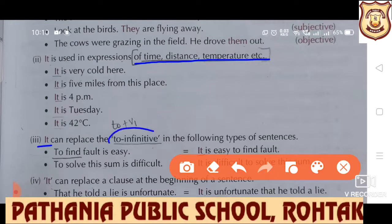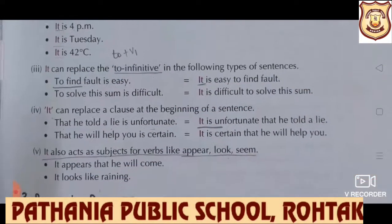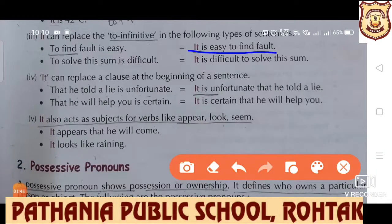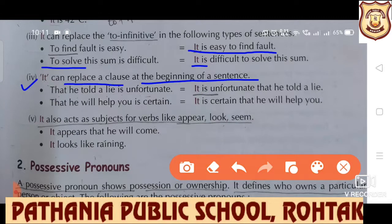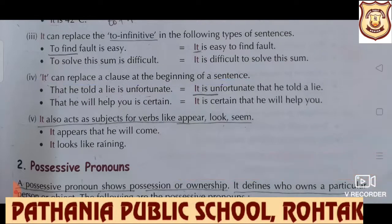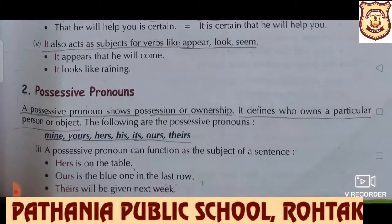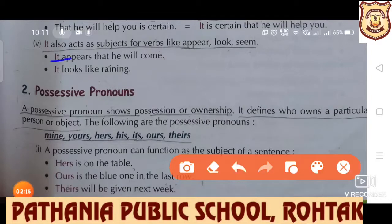It can replace a 'to' infinitive. To-infinitive means 'to' plus the first form of the verb. 'To find fault is easy' — we can write it as 'It is easy to find fault.' 'To solve this sum is difficult' becomes 'It is difficult to solve this sum.' Next, 'it' can replace a clause at the beginning of a sentence. 'That he told a lie is unfortunate' becomes 'It is unfortunate that he told a lie.' It also acts as subject for verbs like appear, look, and seem. If such verbs are there, 'it' is used in the beginning.